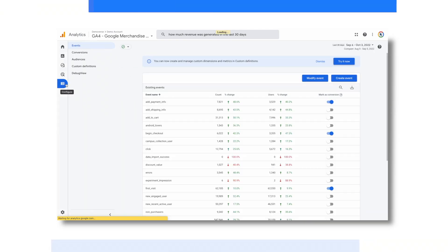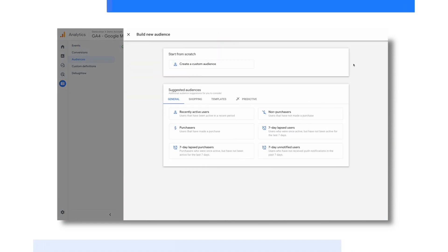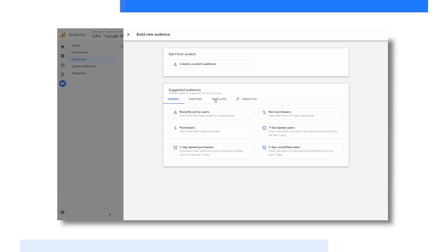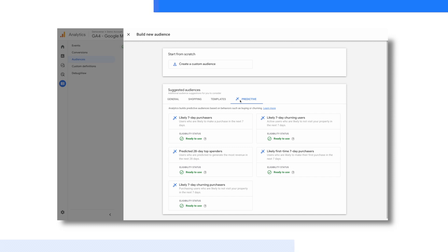You can get started by clicking New Audience from this page. If you look at the bottom box, there are several templated options to quickly build audiences. There's even an option to build predictive audiences that are modeled off of your analytics data to predict outcomes like purchase or churn. Lastly, if you want to create a custom audience, you can use the audience builder to select conditions and sequences to define the users that you want to include within an audience segment.